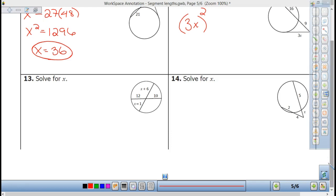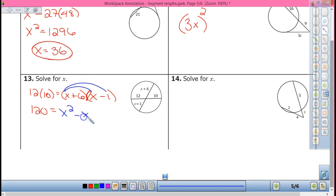All right. 13. Intersect on the inside, right? Two chords. So what times what? 12 times 10 equals x plus 6 times x minus 1. So I've got 120 equals, and then what do I have to do with those guys? I have to distribute them. So x times x is x squared minus x plus 6x minus 6. So 120 equals x squared plus 5x minus 6, right?